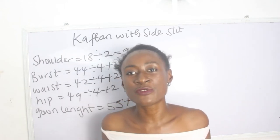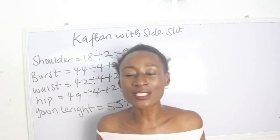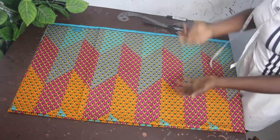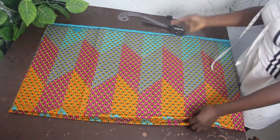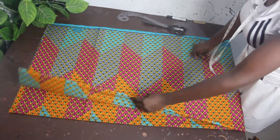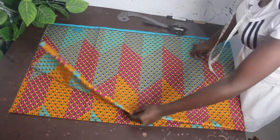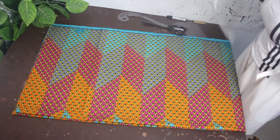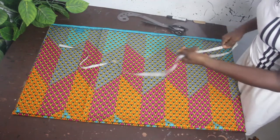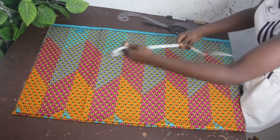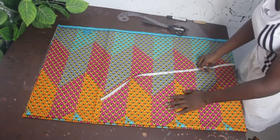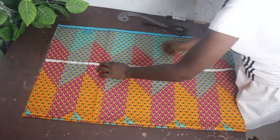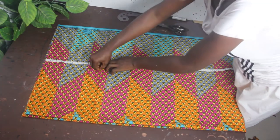What we are going to do now is to cut our caftan with side slits. I've gone ahead and folded my fabric into four. After that, we are going to go ahead and mark our basic measurements. Our shoulder to bust is 10 inches.